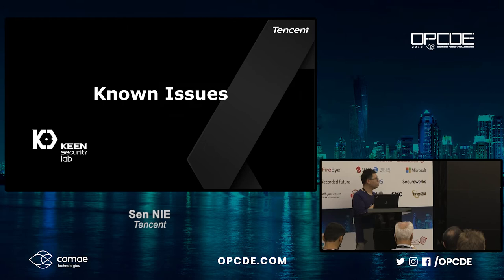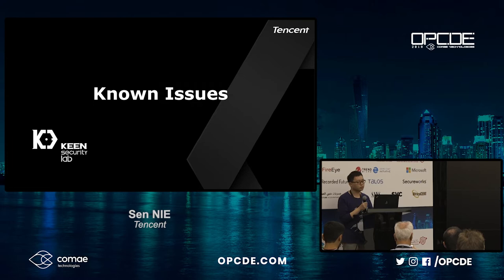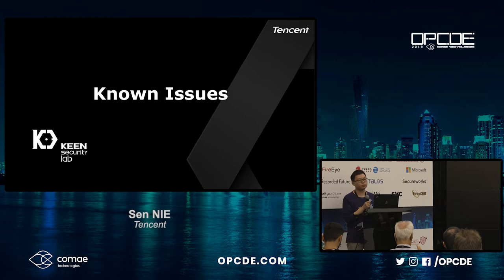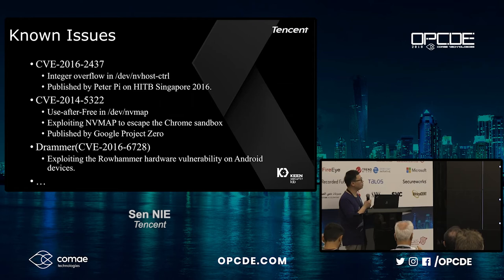Now we'll review some known vulnerabilities. As bug hunters, we first analyze all known issues and find the code patterns, then apply those patterns to the new code base to try to find new vulnerabilities. These vulnerabilities are very typical and interesting — I'll talk about them one by one.